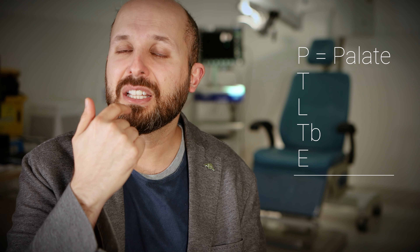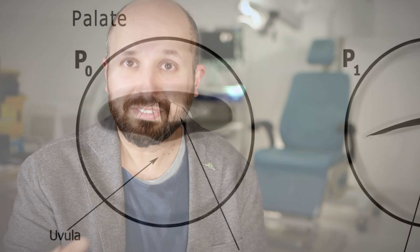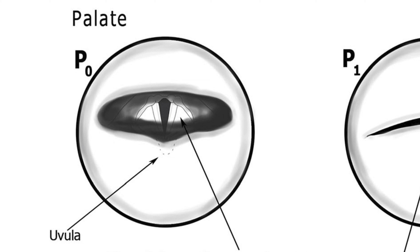Now I'm going to talk about the palate area — P on the classification. The palate is the dangly thing at the back of your throat and the area above it, the soft palate, the bit that flaps around. Each letter of PTL-TBE corresponds to a different obstructive level at the back of the throat. Each letter is given a number: zero is completely normal, one shows some obstruction, and two shows very bad obstruction. Here we're on P0, which means there's no obstruction, no flutter, no snoring.